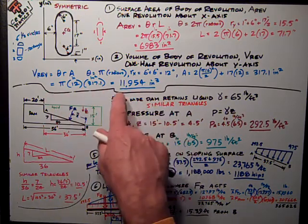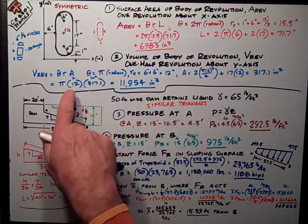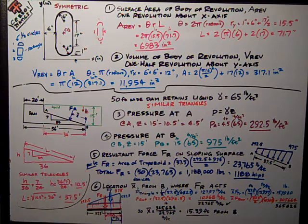Do all the math, and I come up with 11,950 inches cubed. Once again, the units work out. I've got inches times inches squared. It comes up with inches cubed, which is what a volume is.